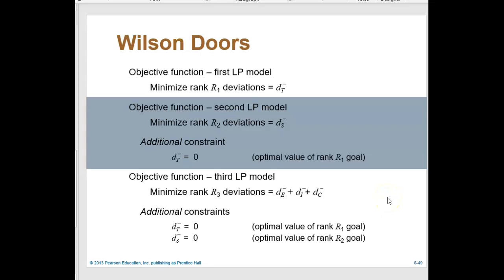To find the optimal solution for a GP model with ranked goals, we set up and solve a series of LP models. This is done over multiple Excel sheets — the number of sheets equals the number of ranks. Because we have three ranks, we will have three Excel sheets. In the first LP model, we consider only the highest ranked goal and ignore all others, minimizing only the rank-one deviation, which is d-negative-t.